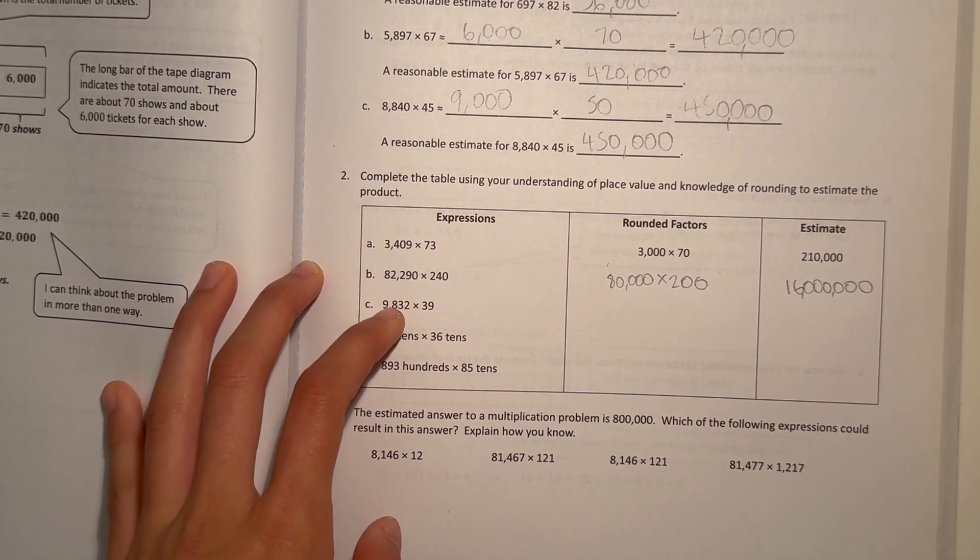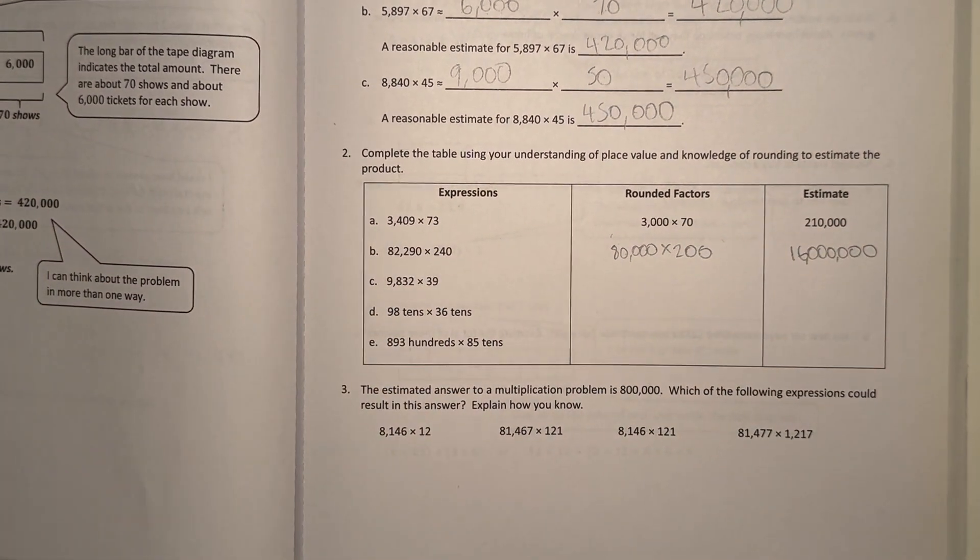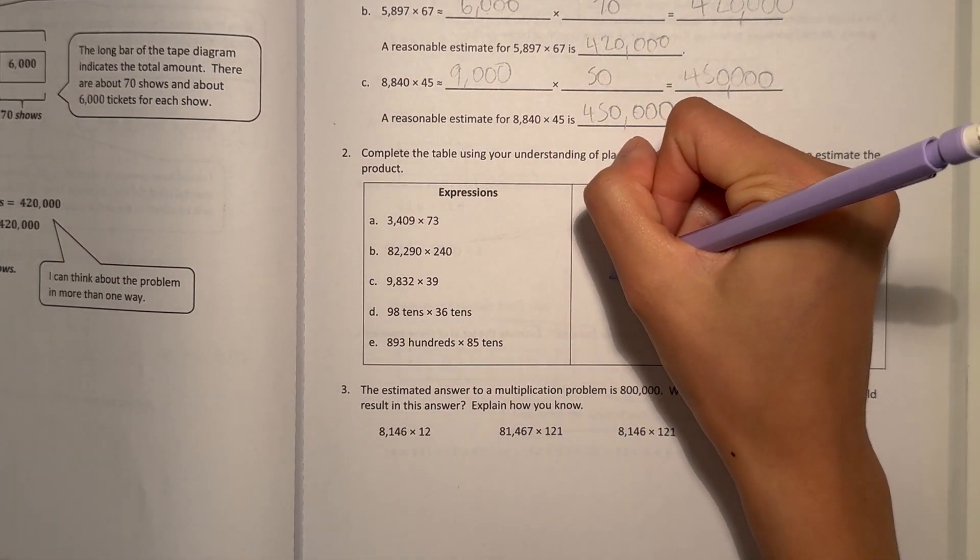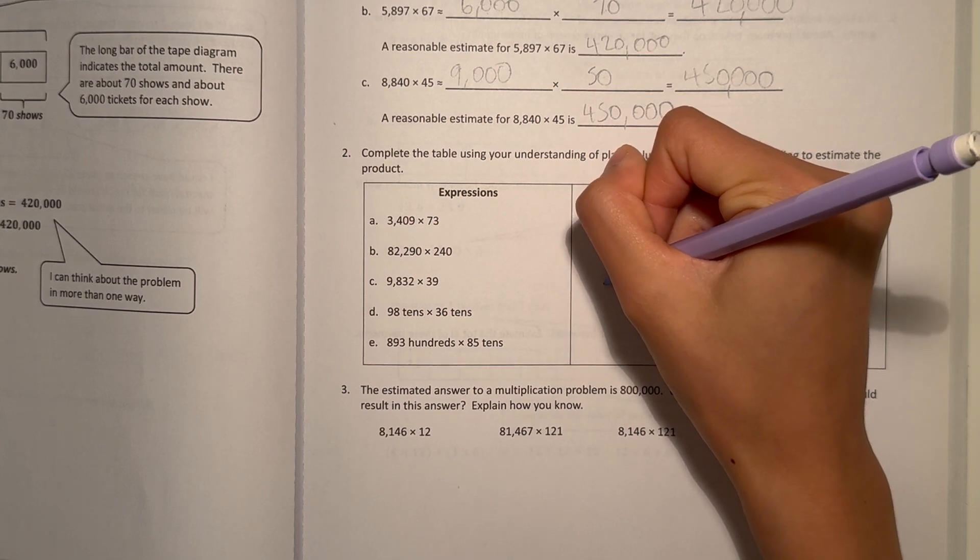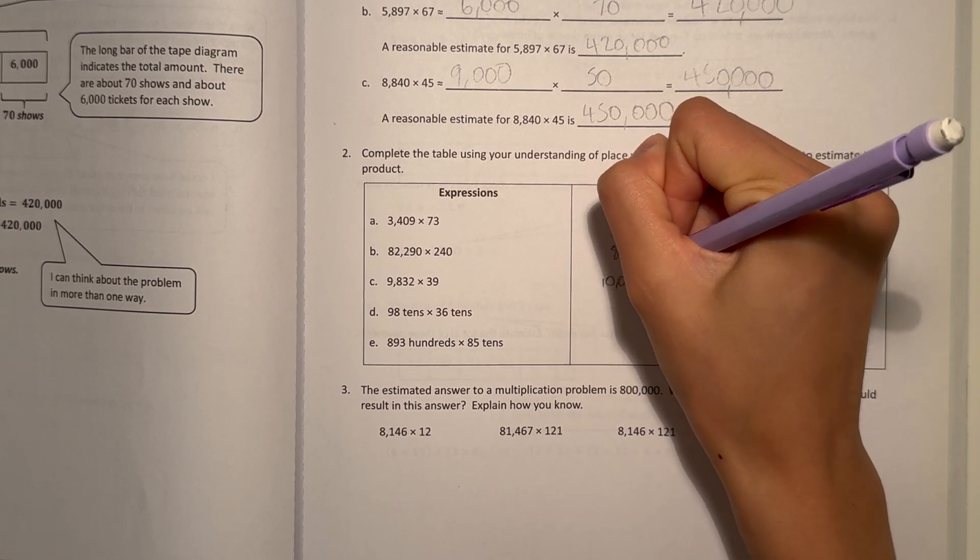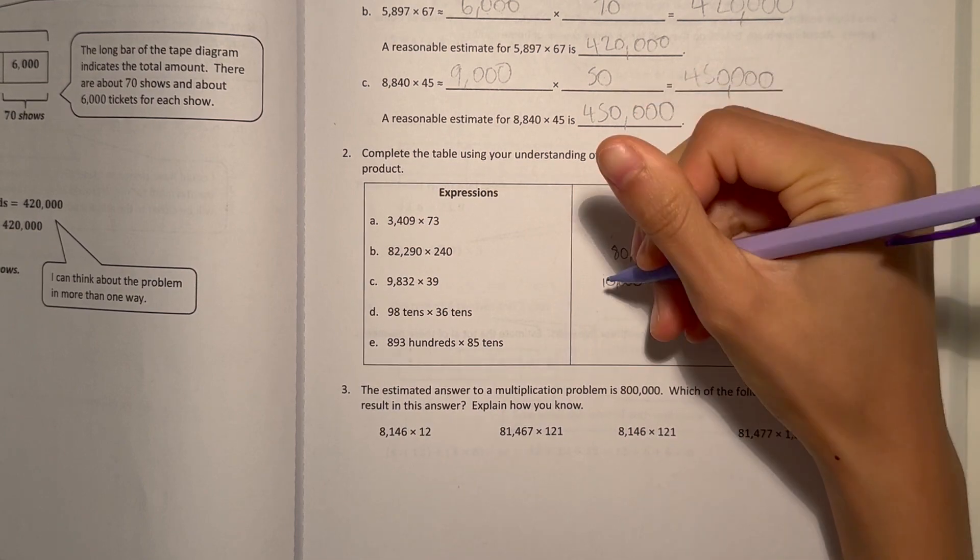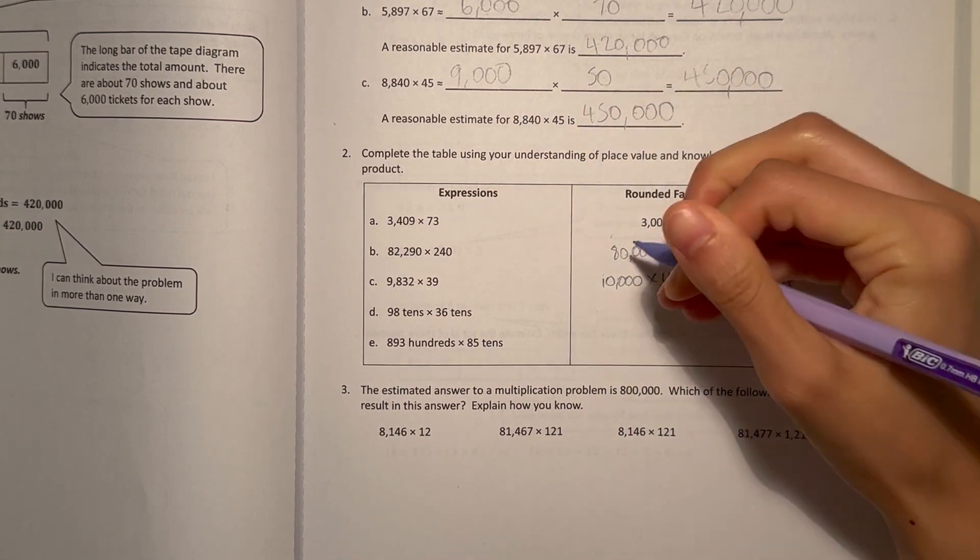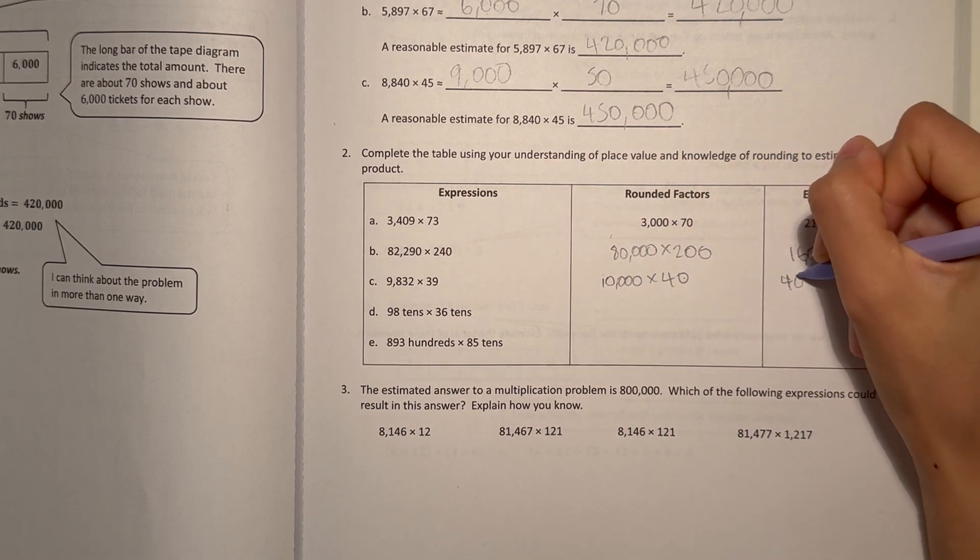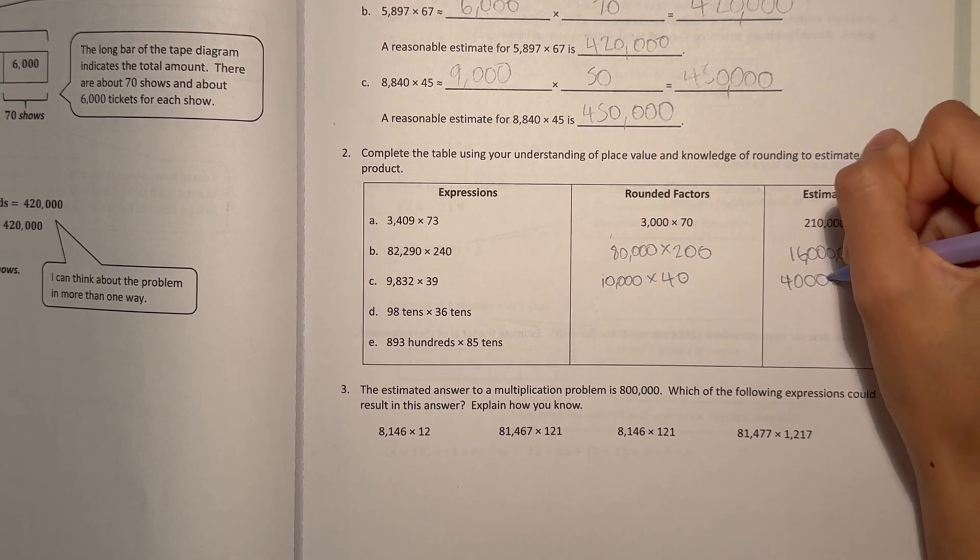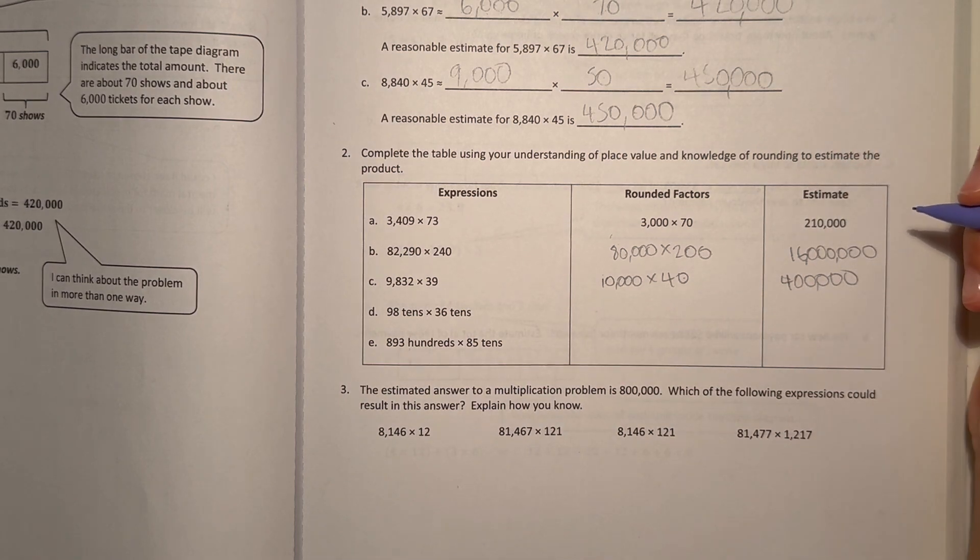C, 9,832 × 39. To the nearest thousands, that would actually go to 10,000. Times 39 would round up to 40. 1 × 4 is 4, and then we have 1, 2, 3, 4, 5 zeros. So the answer is 400,000.